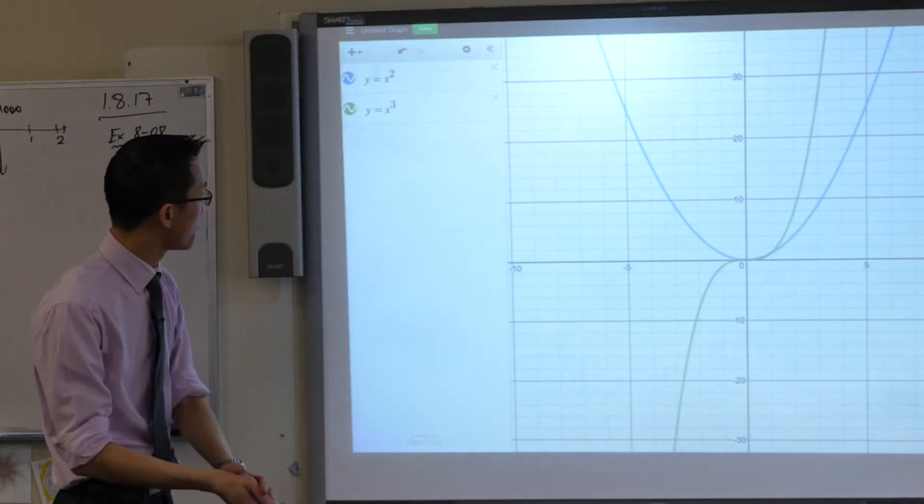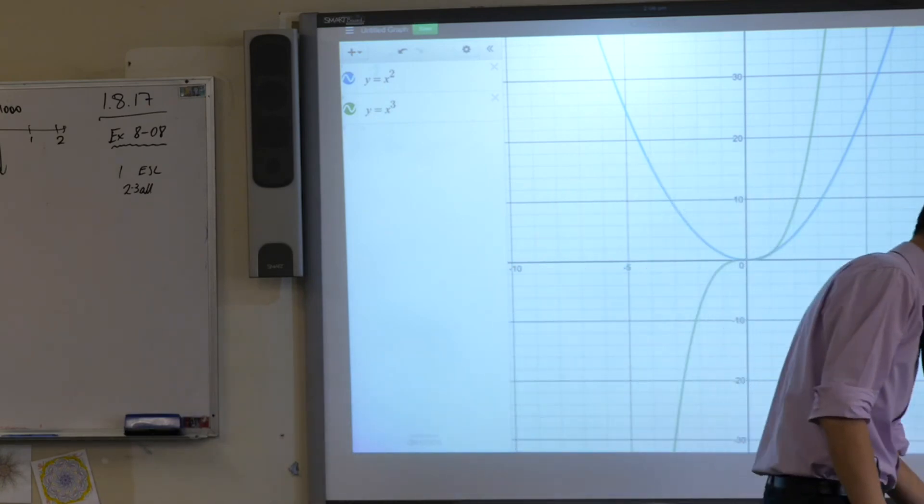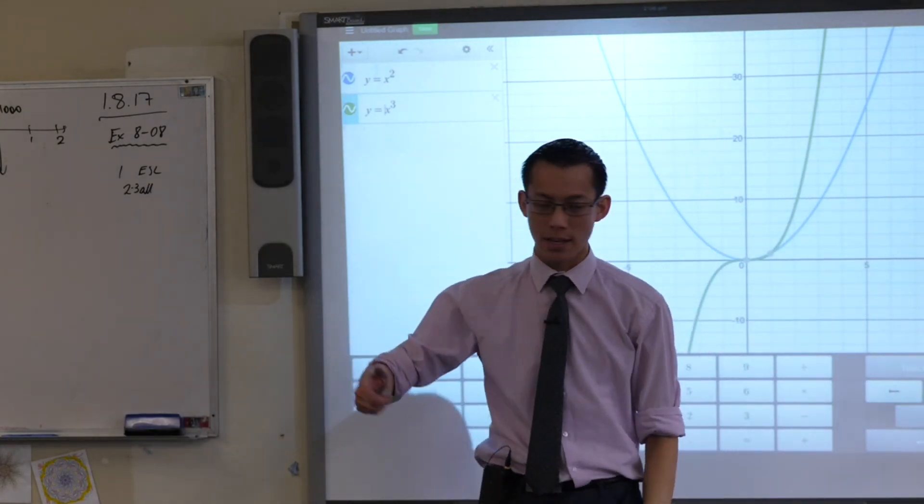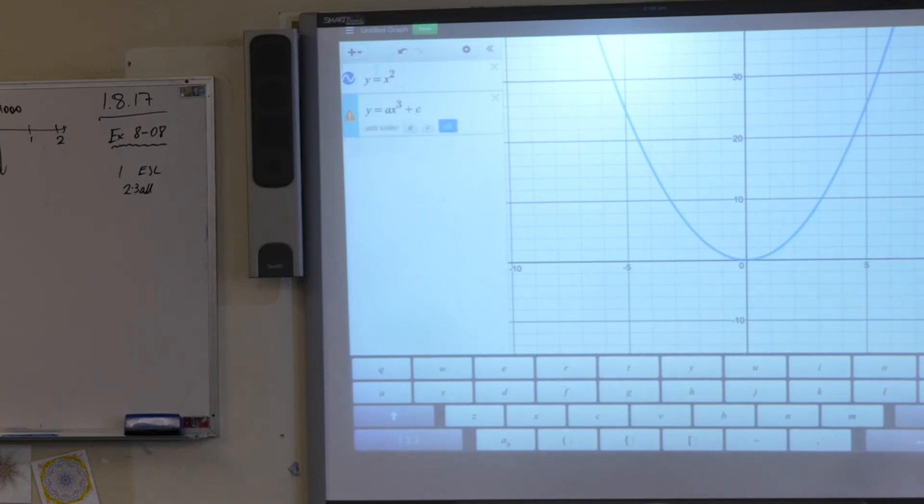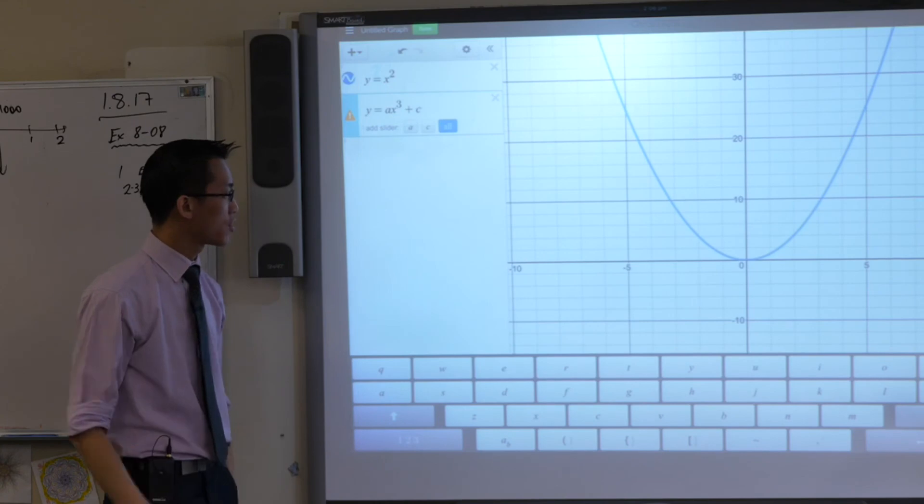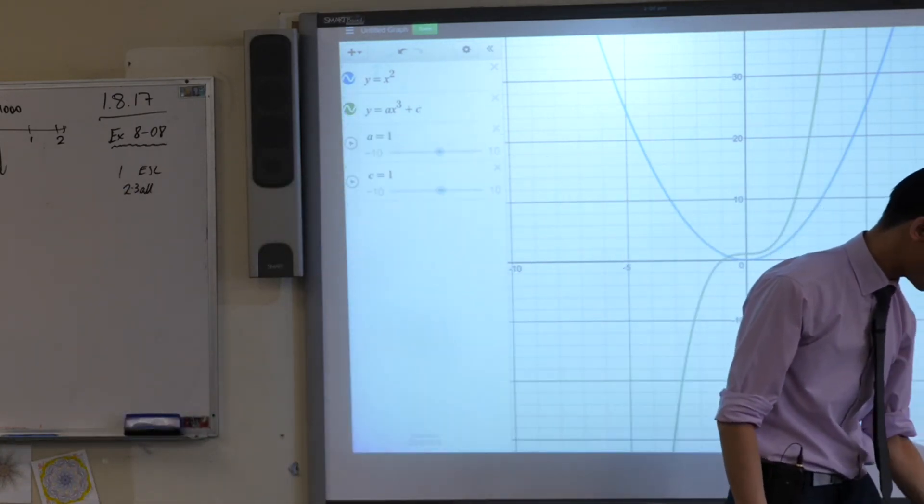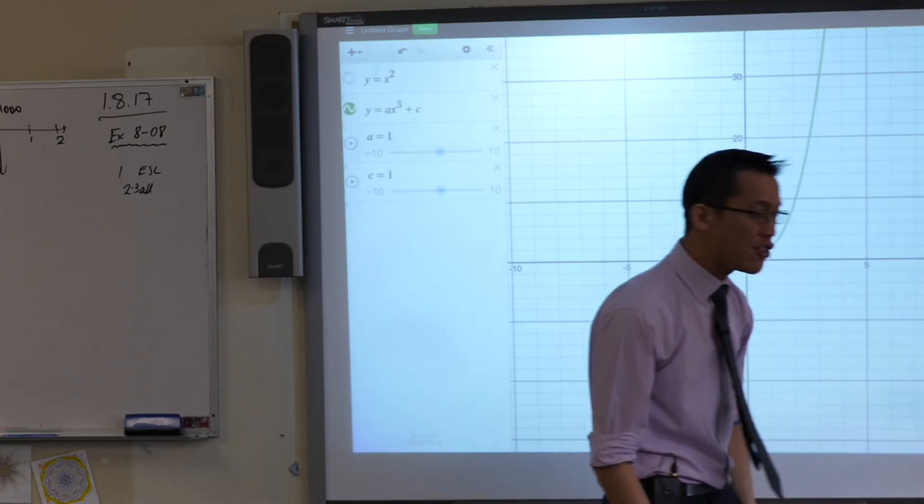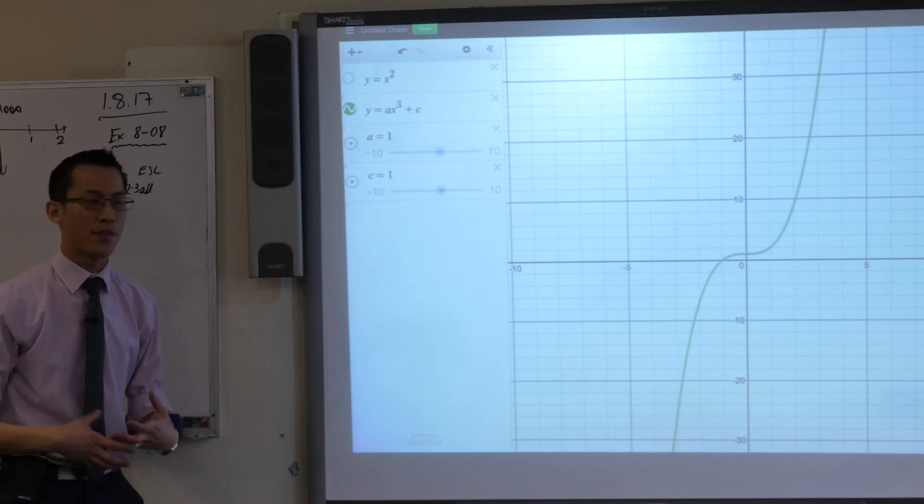The last thing you need is, for this exercise, see that x cubed? I want you to add some letters onto there, just like we did with the parabola. I'd love you to add an A and a C, like this, just like we did to the parabola. And I want you to watch what happens. Go ahead, add your sliders just like you have before. And you'll notice as you slide now, watch what is similar and what is different.